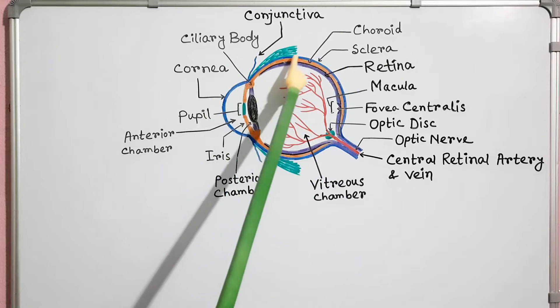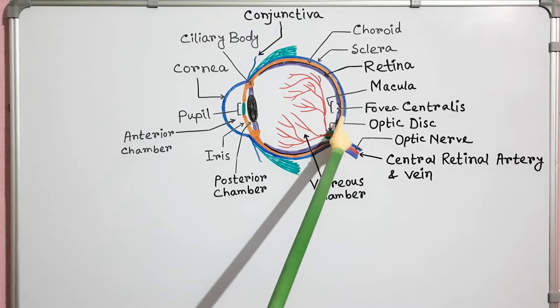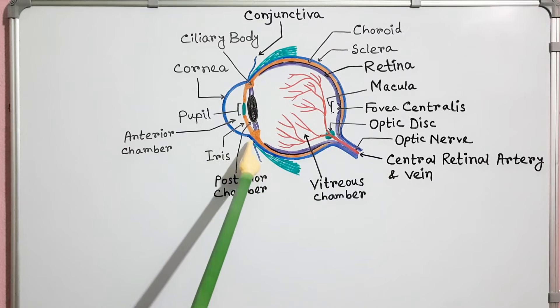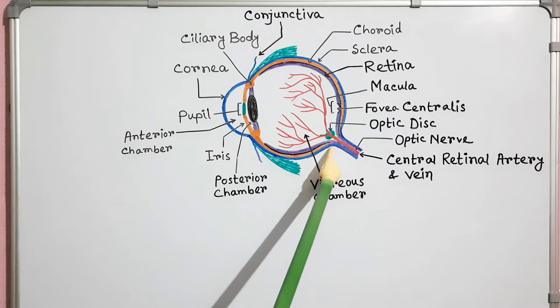This portion of the fibrous layer is known as sclera. It is the firm, opaque, white outer layer of the eyeball.